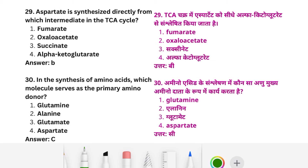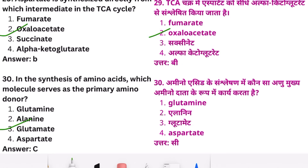Aspartate is synthesized directly from which intermediate in the TCA cycle? That would be oxaloacetate. In the synthesis of amino acids, which molecule serves as a primary amino donor? Glutamate.